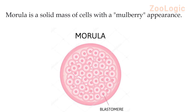After a series of mitotic divisions, the single-cell zygote is converted into a solid ball of cells called a morula, which has a mulberry appearance. Mitosis is extremely rapid during early cleavage — for instance, a frog divides into 37,000 cells in less than two days. No growth occurs between divisions, and the individual cells known as blastomeres become progressively smaller.